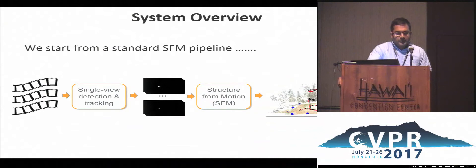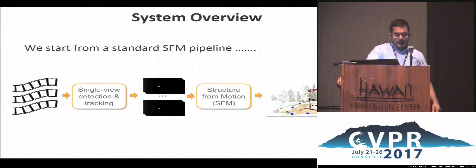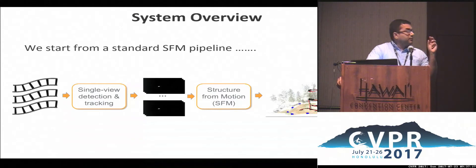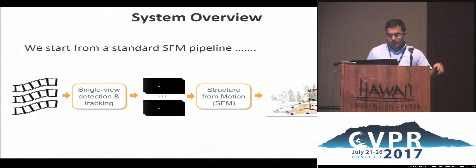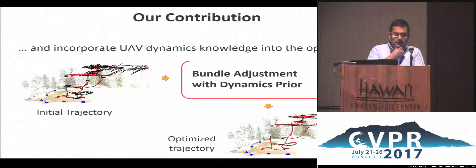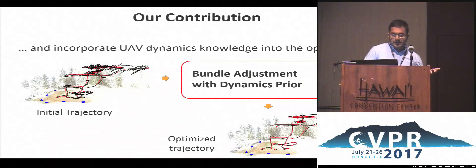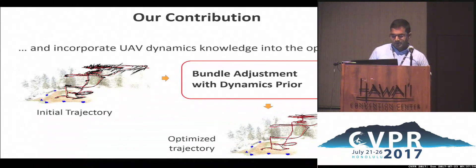This is the setup. We start by processing individual videos independently, doing single-view detection and tracking to recover a bunch of proposals — little blobs shown in the middle video. If you select a single detection from every video frame, you get the correspondences implicitly, and then you can run a structure-from-motion system to get an initial trajectory, shown on the right. That trajectory is noisy, and this is where we incorporate knowledge about the dynamics of the UAV. A second bundle adjustment optimization with a dynamics prior gives a more smooth, optimized trajectory.